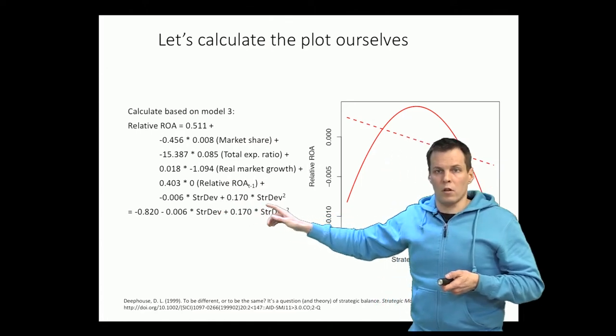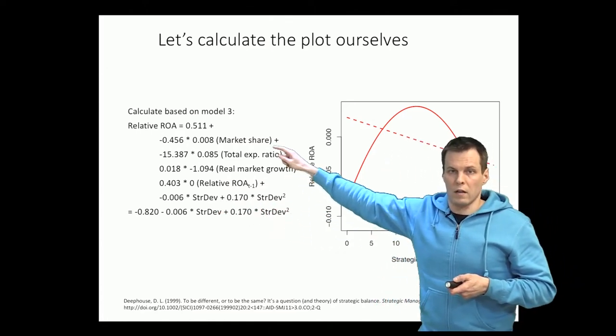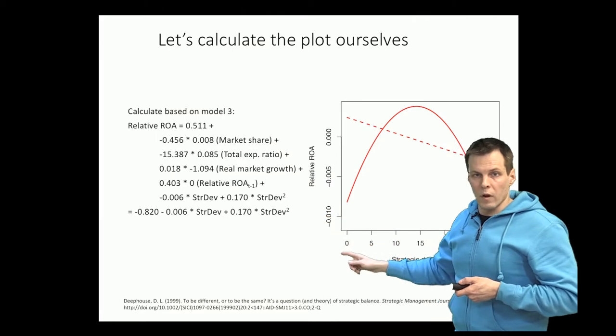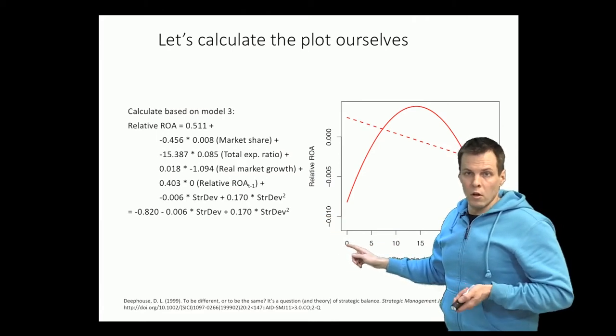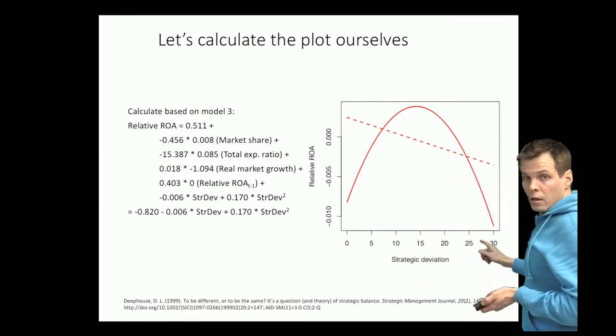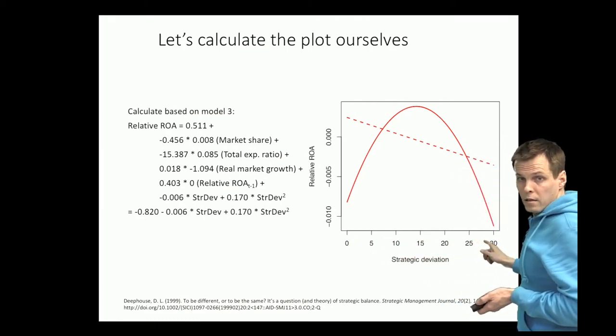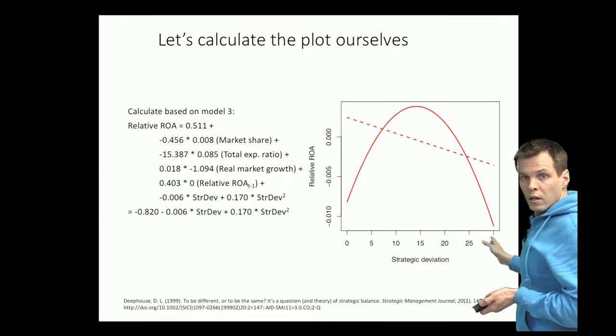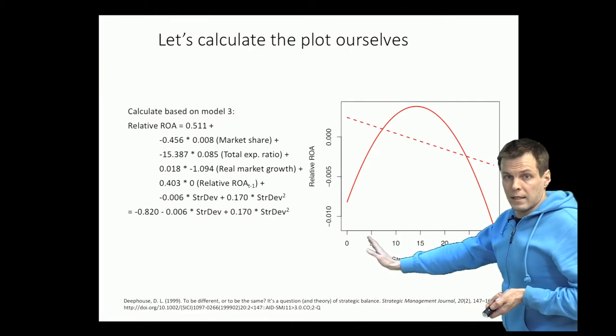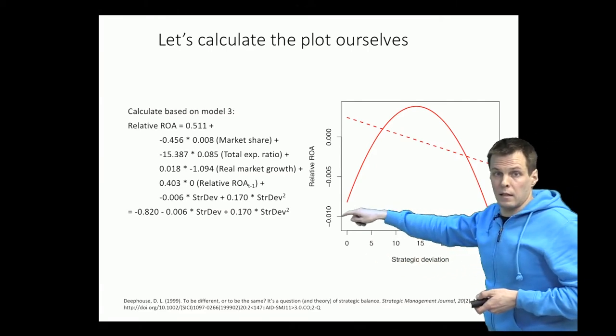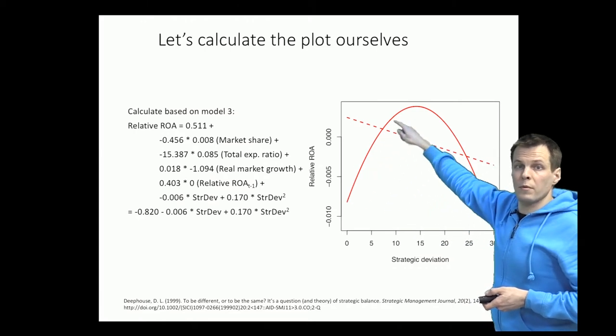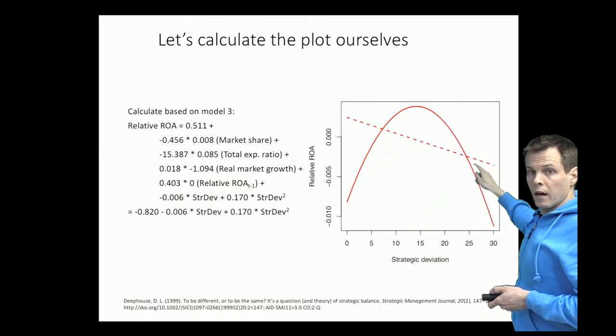Then we plot, calculate different values for relative ROA going from zero, which is the absolute minimum of strategic deviation all the way to about 30, which I inferred to be the range of strategic deviation based on their results. They don't report it, but this kind of range would make sense. And then we can see that the effect is U-shape goes up and then down.